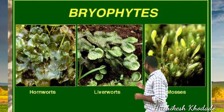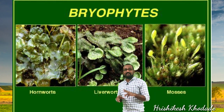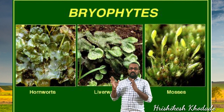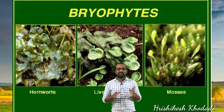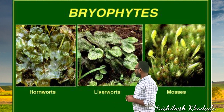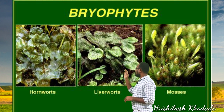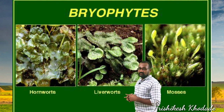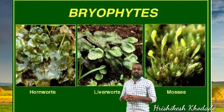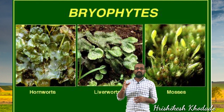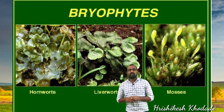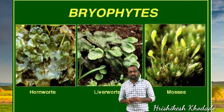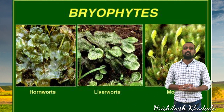Bryophytes are divided into three major classes, each showing highlighted features. These three groups are: liverworts, hornworts, and mosses. These three groups of bryophytes show some differences and some similarities between them, which we will explore in detail where needed.